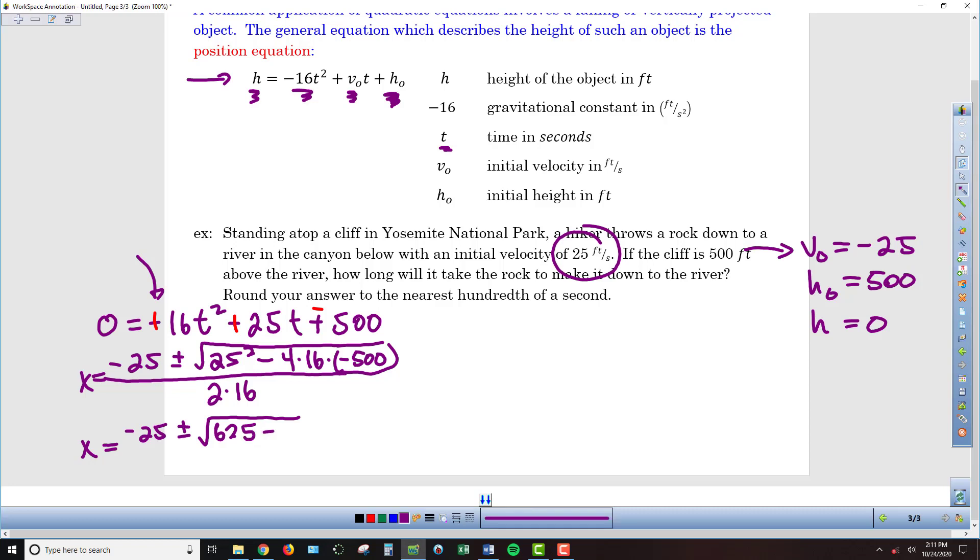And then, minus, or negative 4 times 16, times negative 500. So, we have a negative times a negative, so that's actually going to be a positive. And then, if we multiply 4 times 16 times 500, we end up with a large number. It's 32,000.